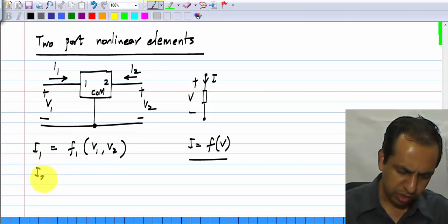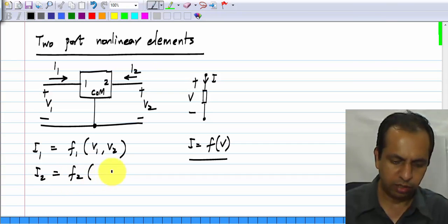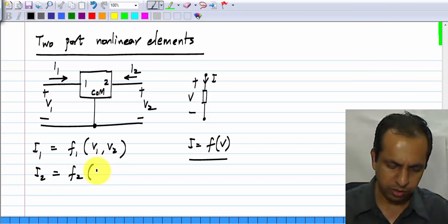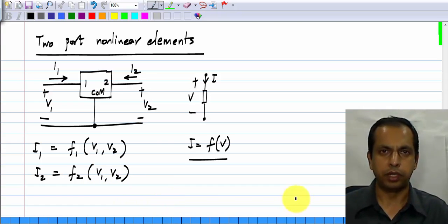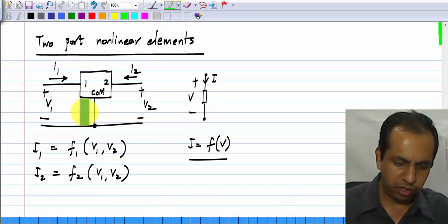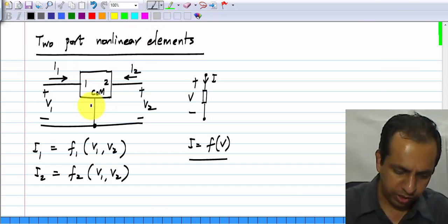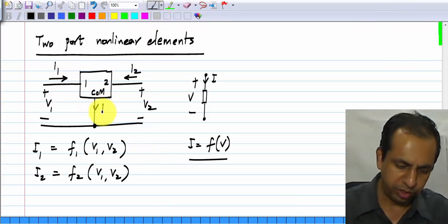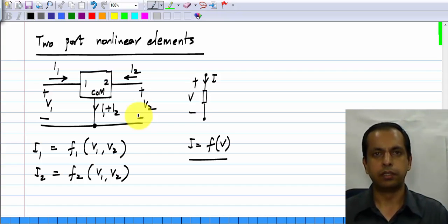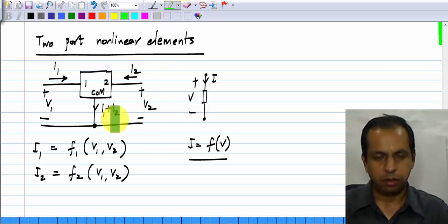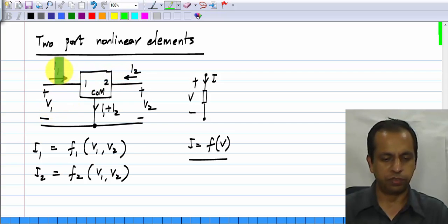Similarly, I2 is another function, in general a different one of V1 and V2. And by Kirchhoff's current law around this entire element, we know that the current coming out of this has to be equal to I1 plus I2. Many other possibilities exist, we could define the voltages as functions of currents or this voltage as a function of this current and that voltage and so on.